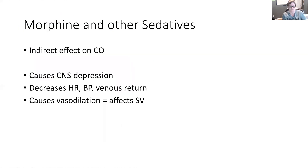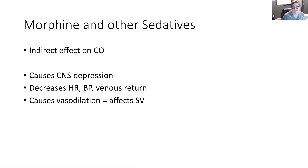Morphine and other sedatives have an indirect effect on cardiac output because they cause CNS depression — the drive to breathe is modified as a result of those drugs. So we end up having a decrease in heart rate, a decrease in blood pressure, and a decrease in venous return, meaning the pump isn't full.